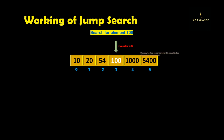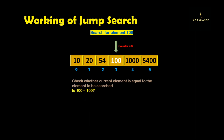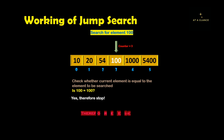Moving backward, our counter is now at position 3. At position 3 we have the element 100. We check whether the current element 100 is equal to the element to be searched, which is also 100 — yes, they are equal. Therefore we have found our element at index 3. This is how jump search algorithm works: jumping jump-size ahead until a condition is satisfied, then moving backward and comparing one by one.